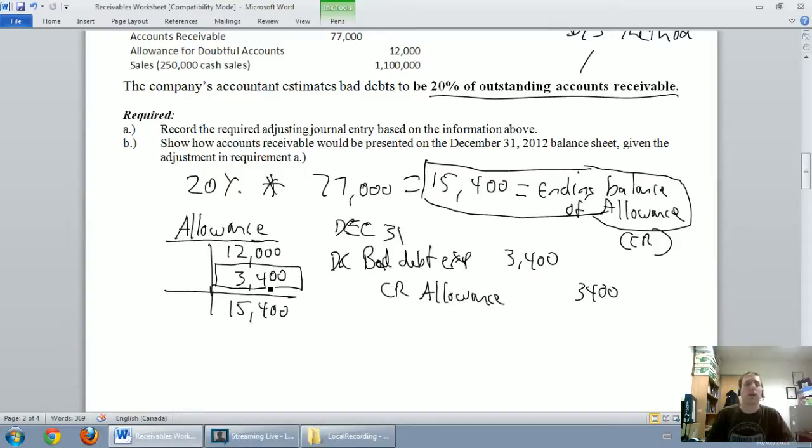So, again, I knew I started with $12,000 in my allowance. I knew I had to end with $15,400 credit balance. So, to go from a $12,000 credit balance to a $15,400 credit balance, I credit it $3,400. So, I credit my allowance.